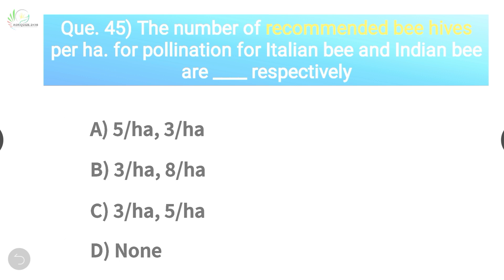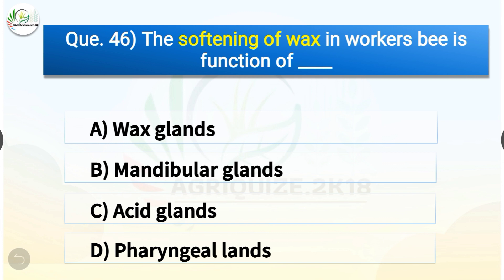Question number forty-six: Softening of wax in worker bee is the function of which gland? The options are: wax glands, mandibular glands, acid glands, or pharyngeal glands. The correct answer is option B — mandibular glands. Softening of wax in worker bee is a function of the mandibular glands.